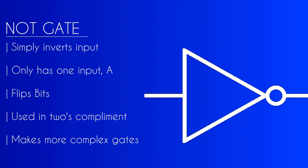NOT only has one input, which is A, and here's the very simple truth table for the NOT gate. So if A is 0, X is 1, if A is 1, X is 0, it's just simply inverting the output. That's why it's called an inverter.